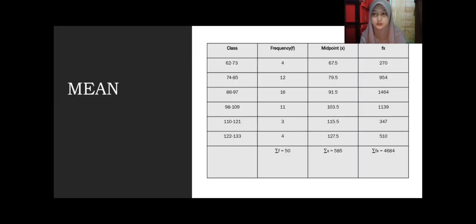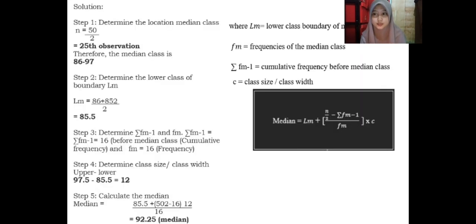To find the median, step one: determine the location of the median class. N divided by 2 equals 50 divided by 2, we get 25 observations. Therefore, the median class is 86 to 97.